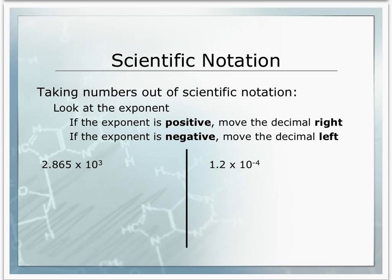Now that we've looked at putting numbers into scientific notation, let's talk about how to take numbers out of scientific notation. To do this, it's all based on the exponent. If the exponent is positive, we're going to move the decimal right — moving the decimal right makes the number larger, and positive exponents indicate numbers larger than 10. If the exponent is negative, we are going to move the decimal left, because negative exponents indicate numbers smaller than 1.